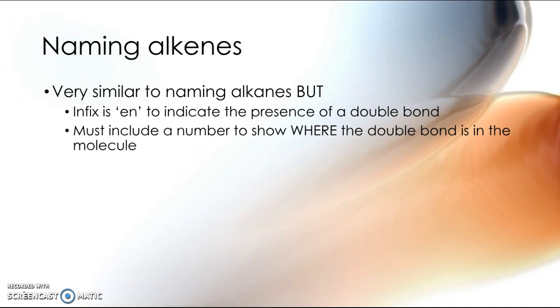To name them we work on a very similar principle to naming alkanes, but the infix, the middle part of the name, has an 'en' rather than an 'an', which shows that there's a double bond present in the longest carbon chain. We have to have a number in that name to show where the double bond is in the molecule. For example, if you've got a four carbon molecule, the double bond could be in several places within that molecule, so we need to show where it is because the different locations of that double bond will lead to different properties for the molecule.